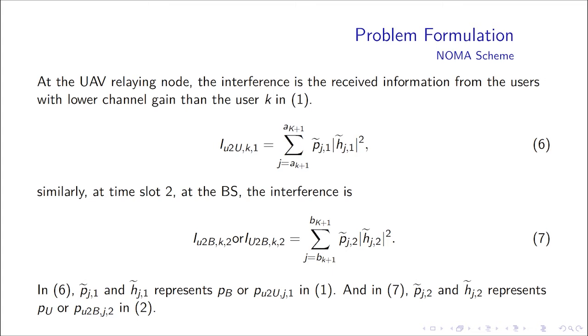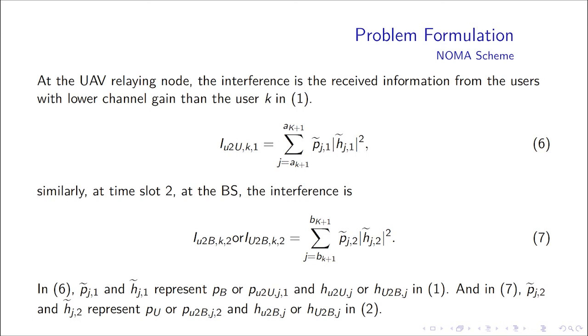At the UAV relaying node, the interference is the received information from the users with lower channel gain than the user K in equation 1, which is the descending order of the channel gain. Similarly, at time slot 2 at the base station, the interference is given as function 7. In equation 6, P2J1 and H2J1 represent Pb or PU2J1 and HU2J or HU2BJ in function 1.